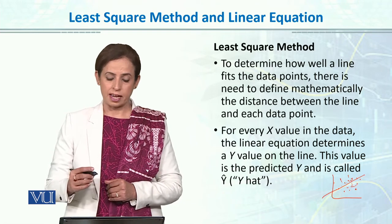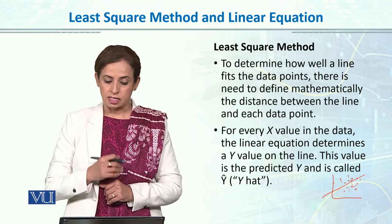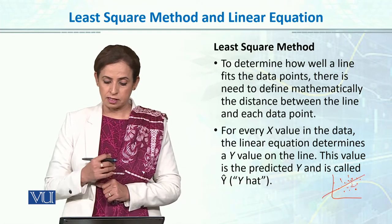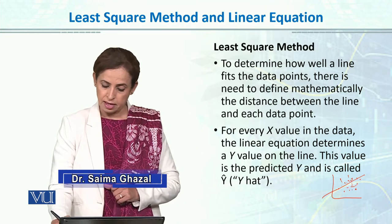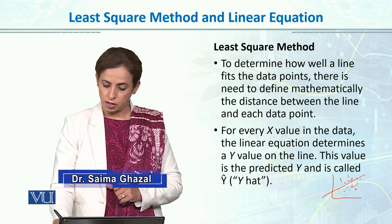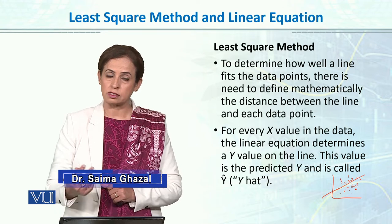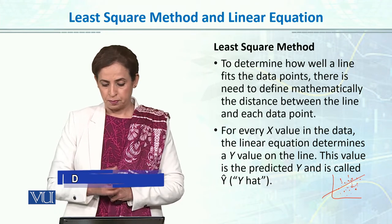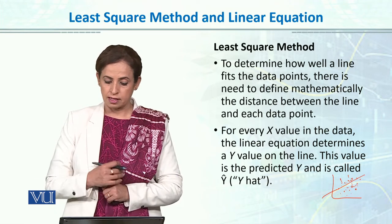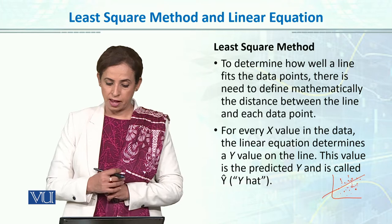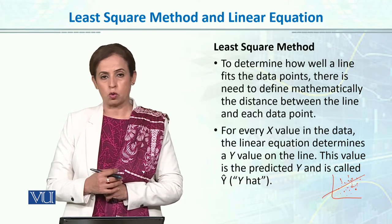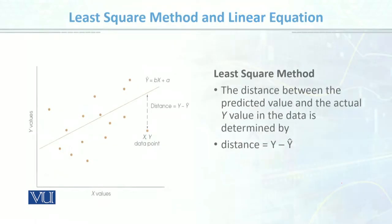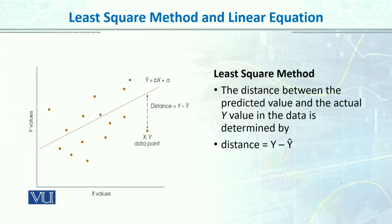To draw this line, there is a need to define mathematically the distance between the line and each data point. We need to know what the actual data points are, and how much distance there will be. For every x value in the data, the linear equation determines a y value on the line. This value is the predicted y value, which we can understand from the picture.